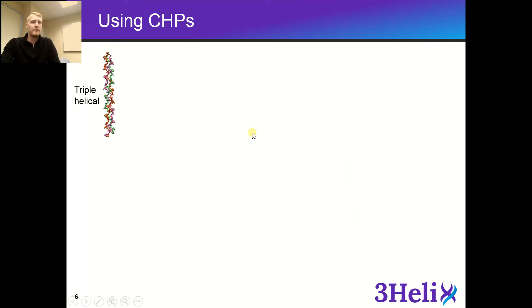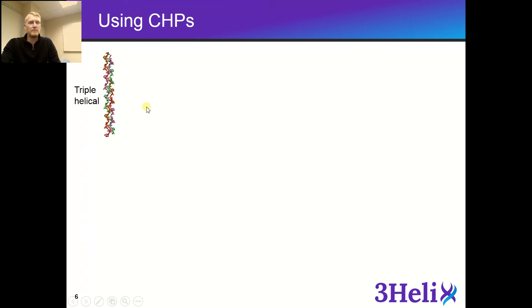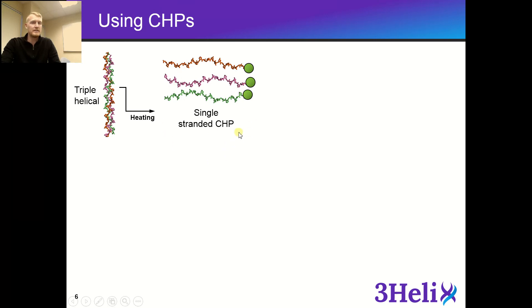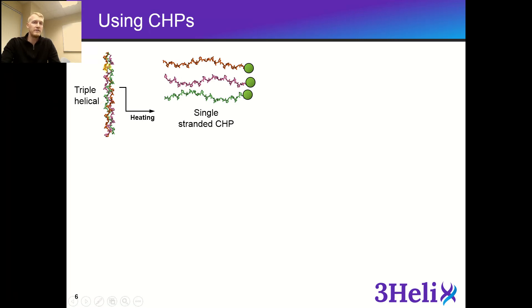If you want to use our CHPs, there are a few things you need to know. When we ship the CHPs, they are in powder form and most likely in a triple helical formation. Therefore, in order to use them, you have to heat them up to obtain a single-stranded CHP. When in single-strand formation, CHPs are able to bind and hybridize with the denatured collagen strands. When in their triple helical form, they lose their driving force to bind, and therefore will not target or bind to any denatured collagen strands.